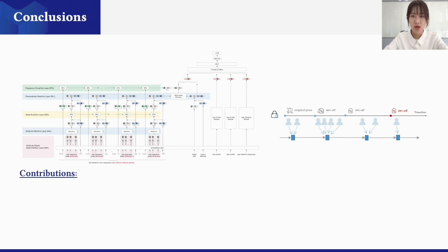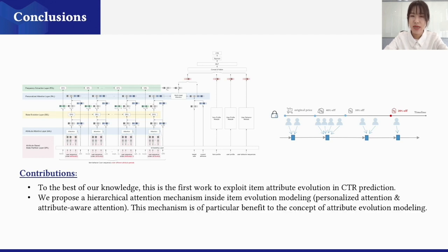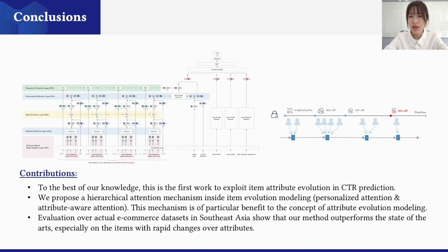The contributions of our work can be summarized as three points. Firstly, to the best of our knowledge, this is the first work to exploit item attribute evolution in CTR prediction. By capturing the item change over attribute dynamics, the framework enables the personalized recommendation to adapt to the frequent changes in the growing e-commerce environment. Secondly, we proposed a hierarchical attention mechanism inside item evolution modeling, which activates similar users and their similar attribute values, and it is beneficial to the item attribute evolution modeling. Thirdly, we evaluate the proposed method on the CTR prediction task over actual e-commerce dataset in Southeast Asia, and then illustrates the performance of our method, especially on the items with rapid changes over attributes, demonstrating the effectiveness of capturing dynamics in item recommendation.